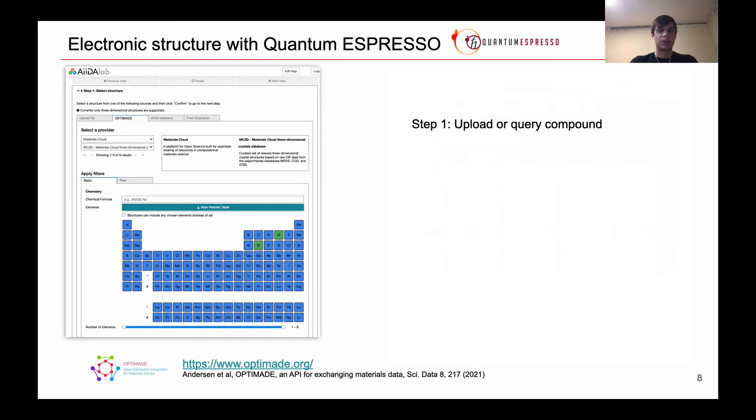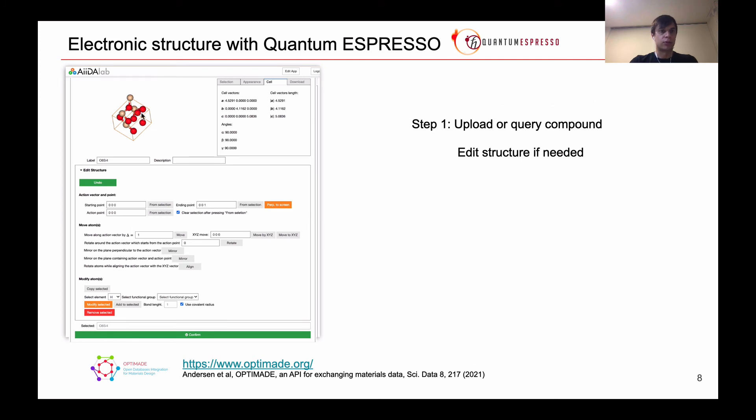The next example is Quantum Espresso application. We import structure using Optimade importer. Optimade is a consortium which developed a protocol that allows to connect to different structure databases and extract the structures from there. So we will pick up silicon oxide. So here, as you can see, we selected silicon and oxide. And then we just pull the structure from the database. So here is the structure.